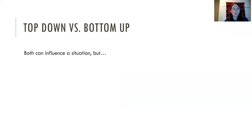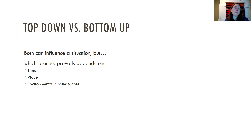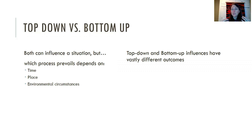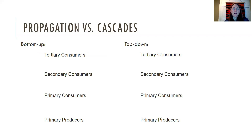We're going to talk about two things: top-down versus bottom-up effects in ecosystems. Increasing production from the bottom-up can change things, and increasing predators from the top-down can change things. How they influence an ecosystem depends on time, place, and environmental circumstances — and although top-down and bottom-up influences sound similar, they have vastly different outcomes.